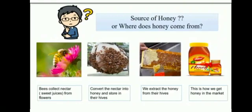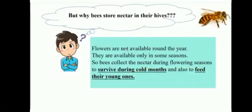Now, from where do we get honey? Honey bees collect the sweet juices from the flowers. These sweet juices are called nectar. Then they convert the nectar into honey and store it in their hives. Then we extract the honey from their hives. Bees collect the nectar during the flowering seasons to survive during cold months and also to feed the young ones.